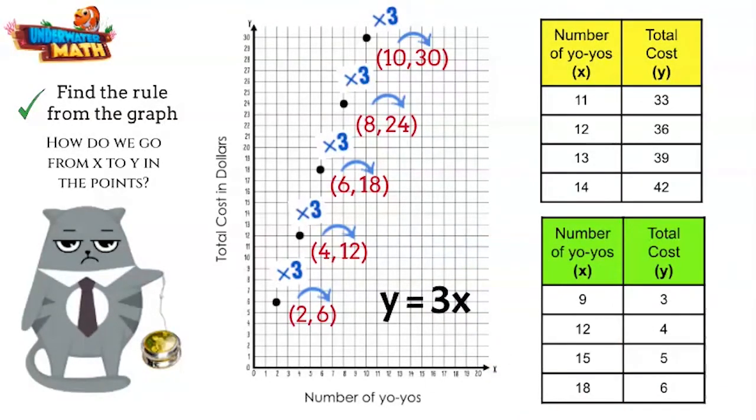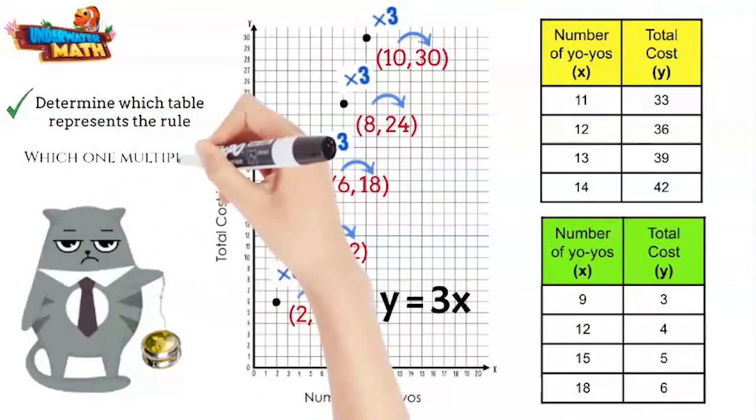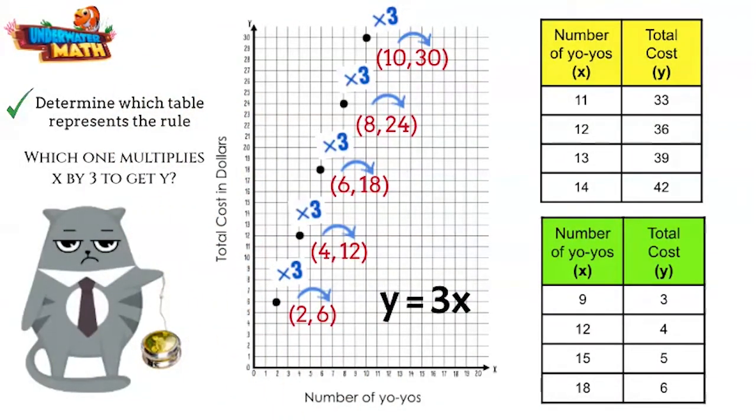Now let's find out which table fits this rule. Take a look at the green table first. What is happening each time to get to y? Dividing by 3 works for each pair of points. This is not the rule we are looking for.